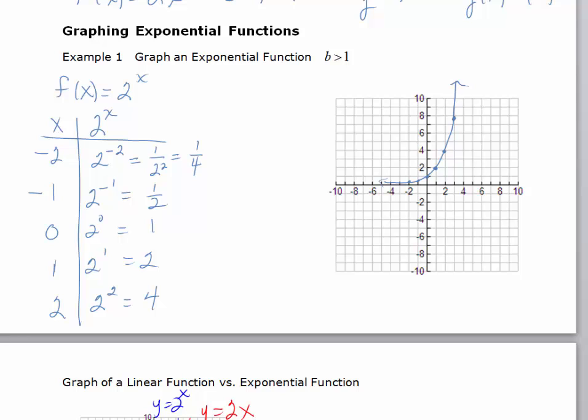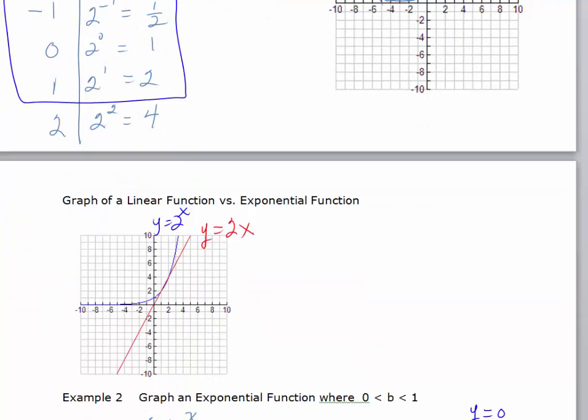And so, if we focus on these three ordered pairs, when x equals negative 1, when x equals 0, when x equals 1, when x equals negative 1, you're just taking the reciprocal of the base. When x equals 0, the value of the exponential function is going to be 1. And when x equals 1, the base is going to be your value.